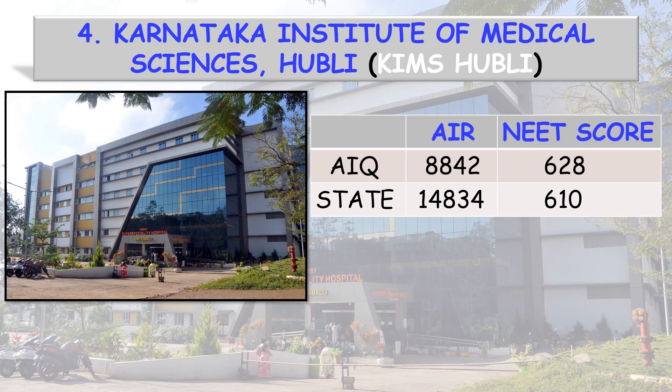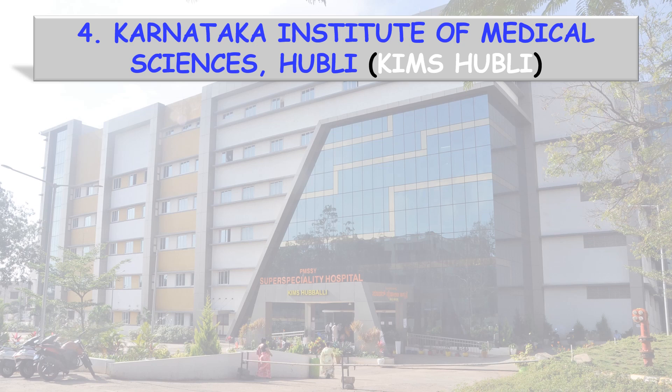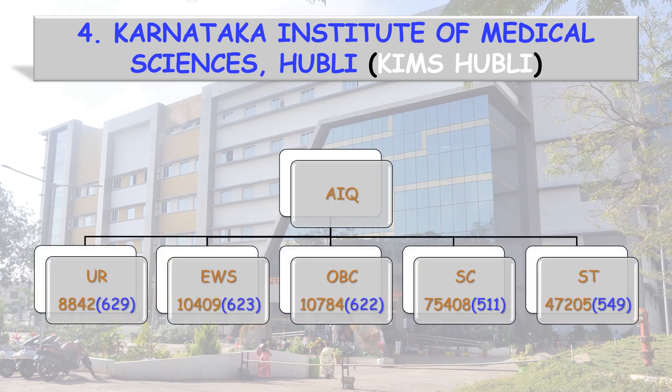All India Quota cutoff: All India Rank 8,842 corresponding to a NEET score of 628. State Quota All India Rank 14,834, NEET score 610. All India Quota Unreserved: AIR 8,842, score 629. EWS: AIR 10,409, score 623. OBC: score 622. SC: score 511. ST: score 549.